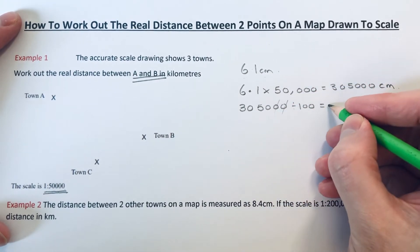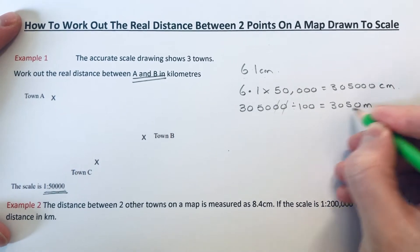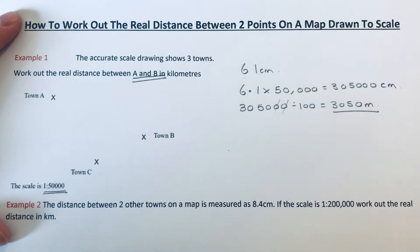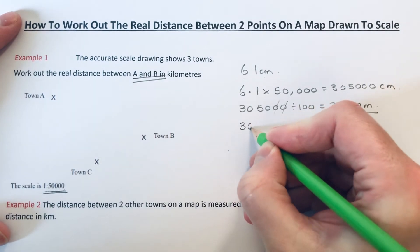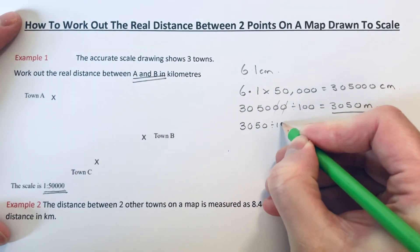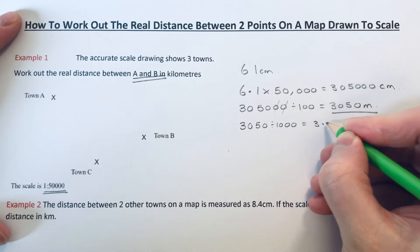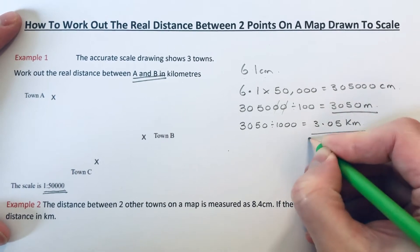Then we can change the meters into kilometers by dividing by 1,000 because there's 1,000 meters in a kilometer. So that will give us 3.05 kilometers, and that's the final answer.